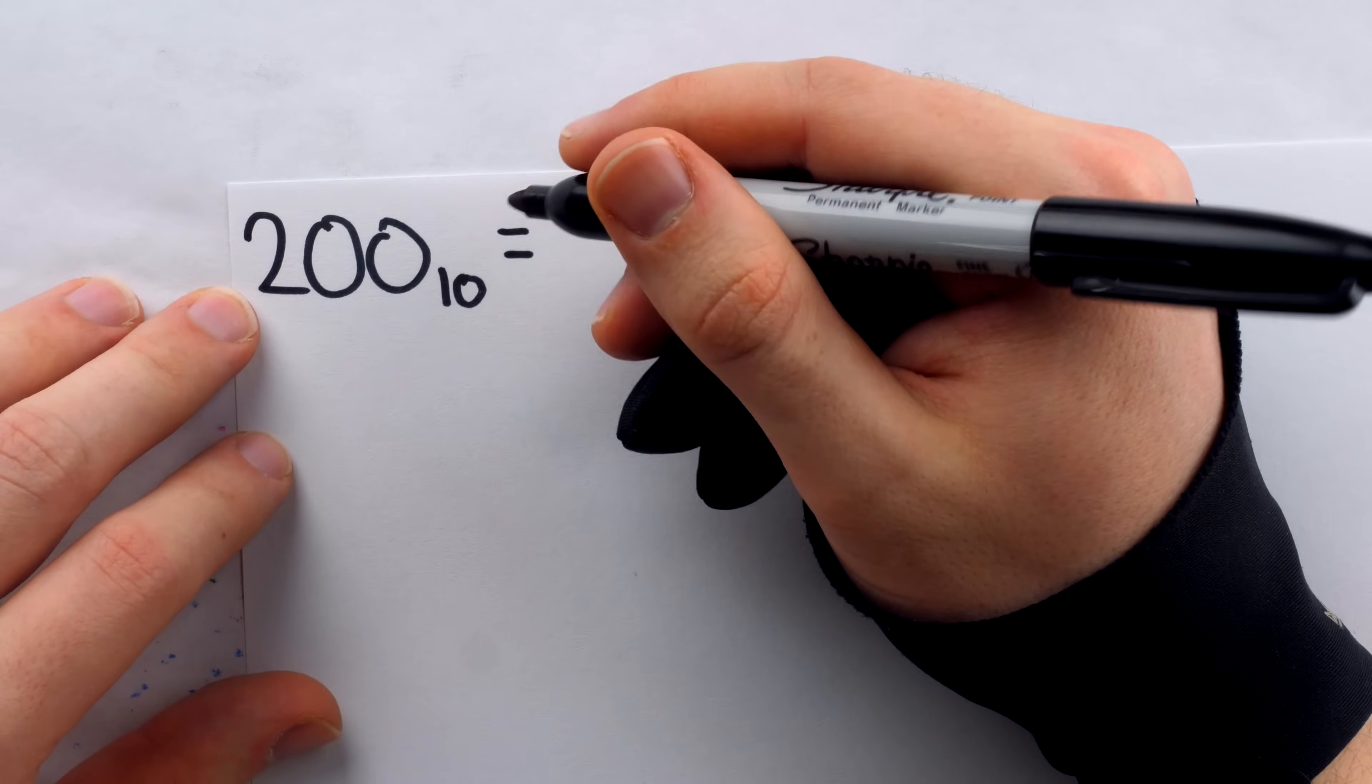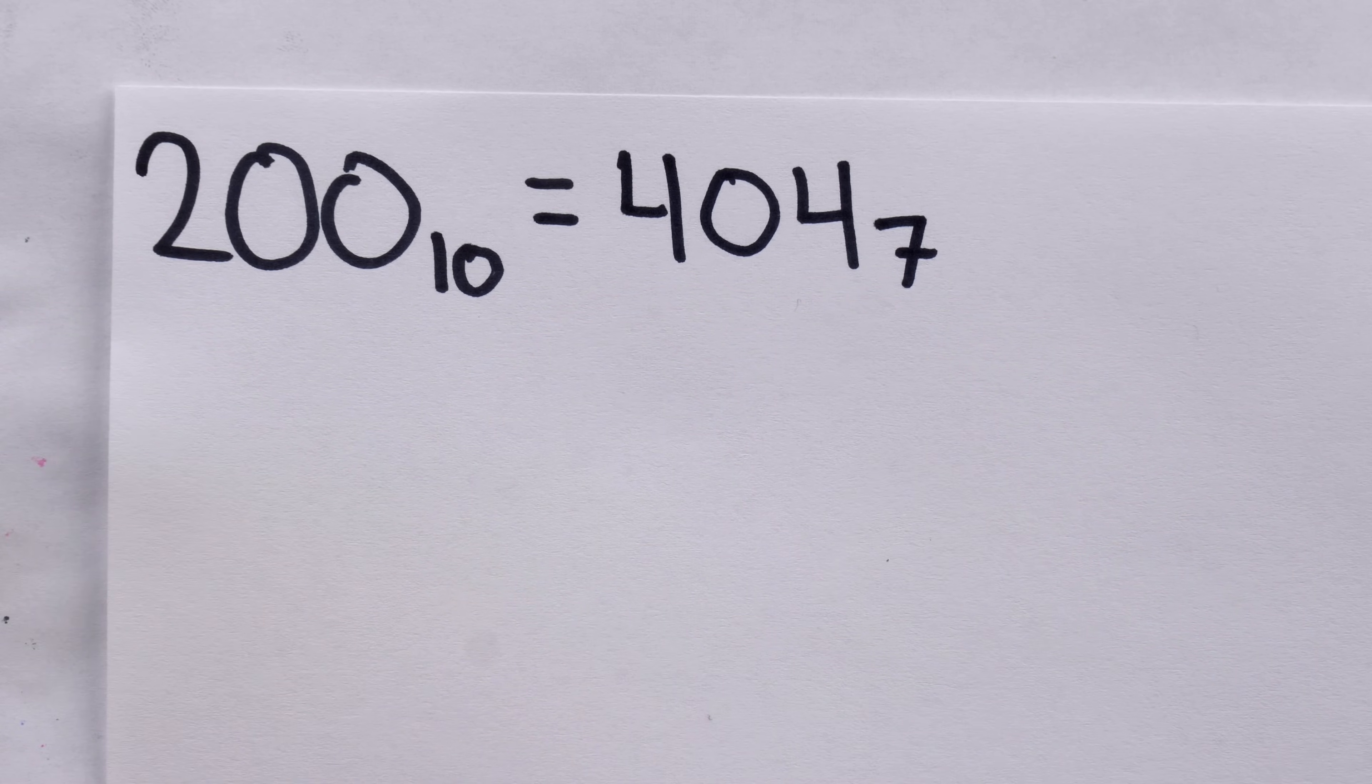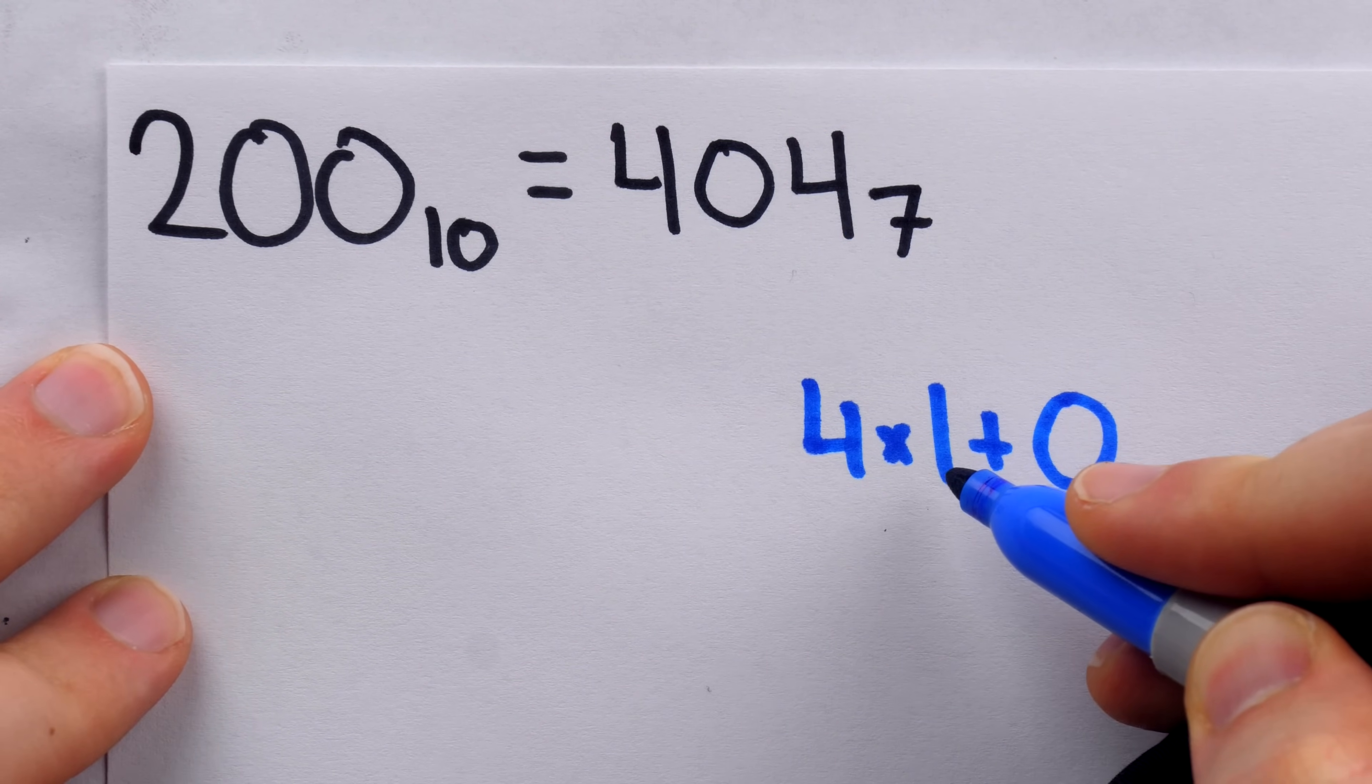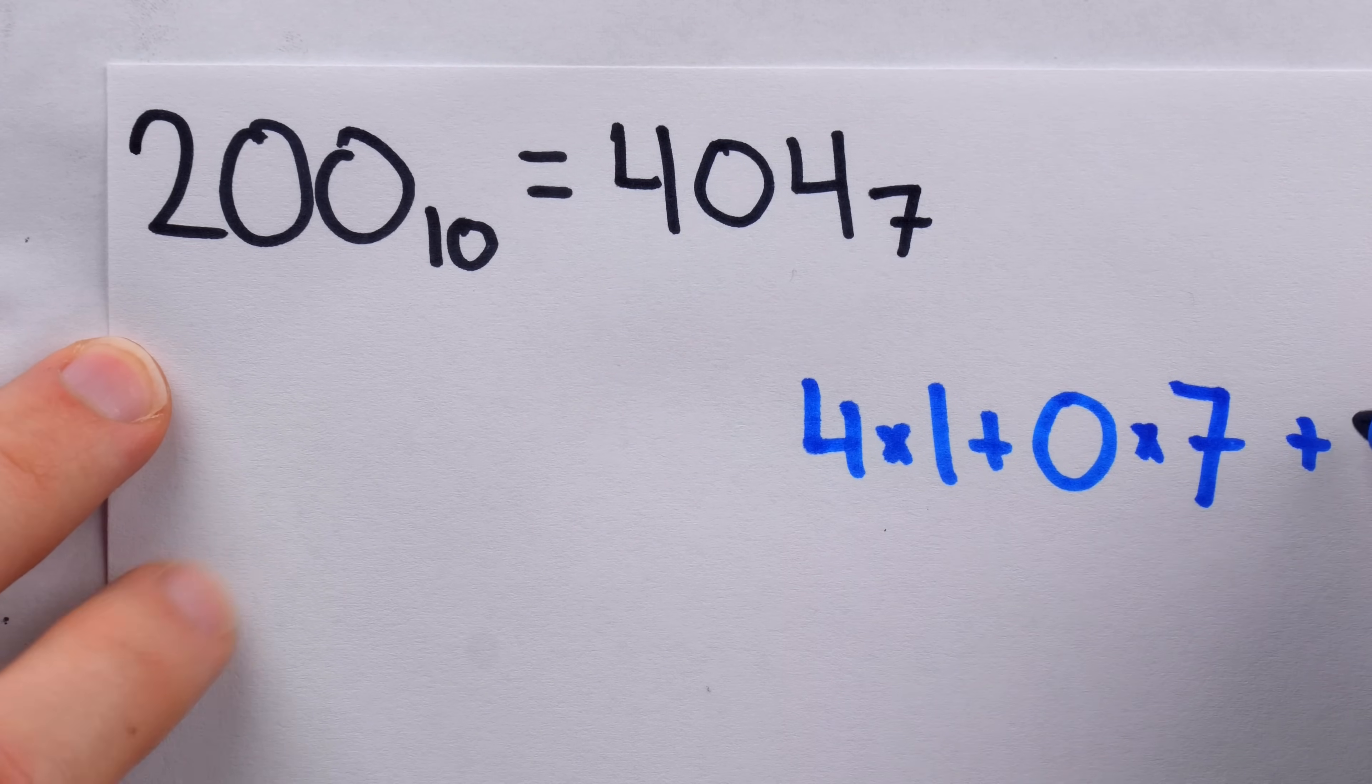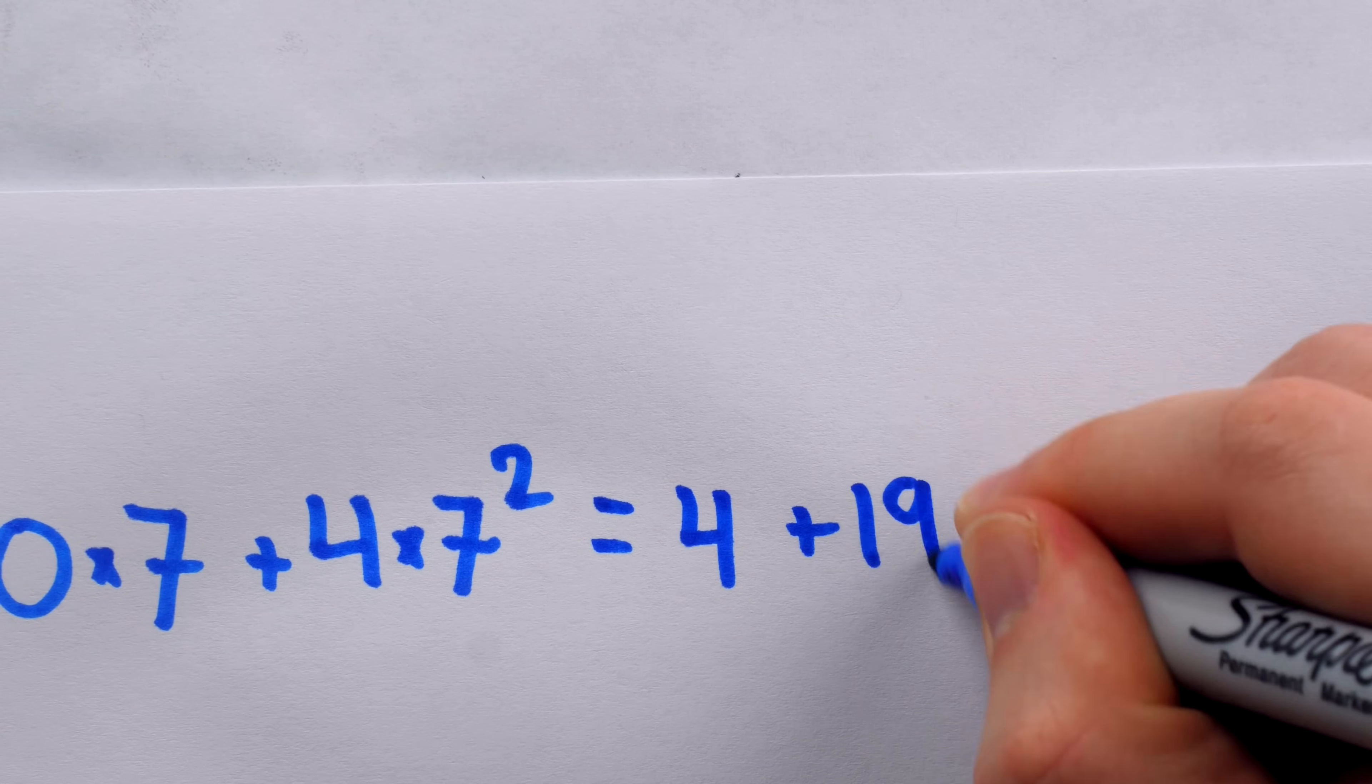So 200 in base 10, well in base 7, it's equal to 404. And this, whichever order we write the digits in, is 404. To make sure you're clear on this base 7, this 4 represents 4 copies of 1, or 7 to the power of 0. This 0 represents 0 copies of 7, and this 4 represents 4 copies of 49, or 7 squared. And that's equal to 4 plus 196, or of course, 200.